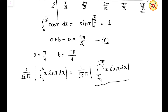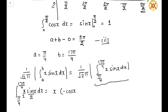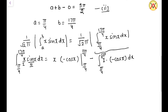We solve the integral ∫_{π/4}^{17π/4} x sin x dx using integration by parts. Taking x as the first function and sin x as the second, we get: [x × (−cos x)]_{π/4}^{17π/4} − ∫_{π/4}^{17π/4} (−cos x) dx, which further simplifies with the limits applied to the cosine terms.